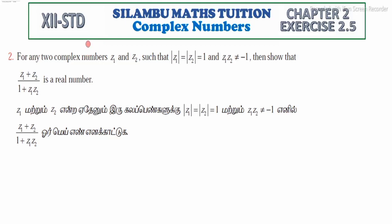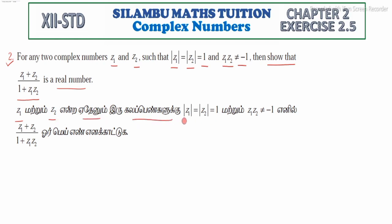Hi students, this is a 12th standard exercise 2.5, question number 2. For any two complex numbers z1 and z2 such that modulus of z1 is equal to modulus of z2 is equal to 1, and z1 into z2 is not equal to minus 1, then we have to show that z1 plus z2 divided by 1 plus z1 z2 is a real number.